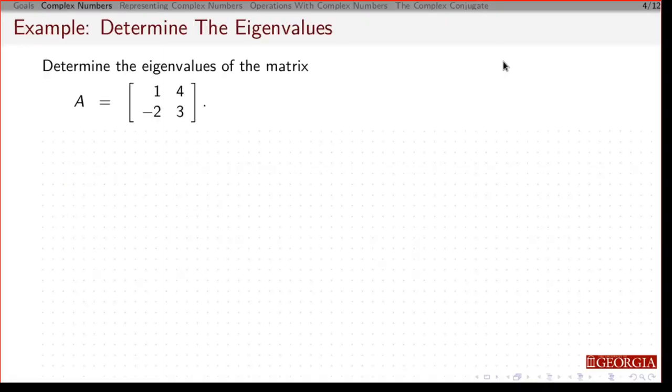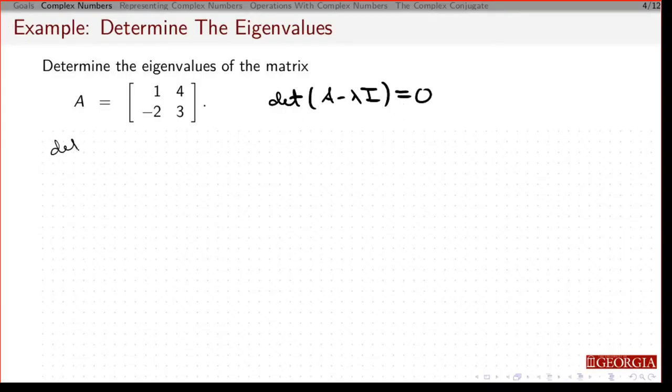So where do these come up? If we just naively take a matrix and go to find the eigenvalues, what happens? The idea is I want to find the determinant of A minus lambda I, set that equal to 0. This will give me the characteristic polynomial. I want to find the roots of that polynomial. In this case, I'm going to get the determinant of 1 minus lambda, 4, minus 2, 3 minus lambda. That is going to give me 1 minus lambda times 3 minus lambda, minus 4 times minus 2. And I'm going to set that equal to 0. The idea is I want to solve that for lambda.